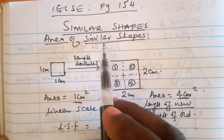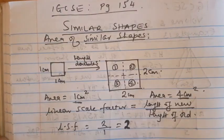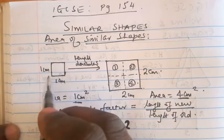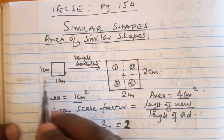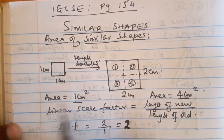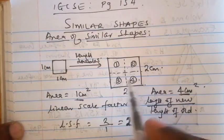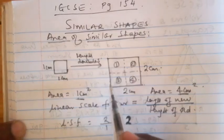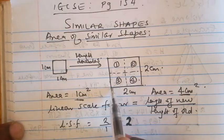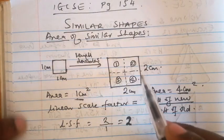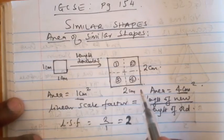Under similar shapes, I want us to talk specifically about the area of similar shapes. Allow me to have a square of one centimeter length and one centimeter width. If we happen to double the length of these dimensions, it will have a length of two centimeters because we are doubling from one to two, and a width of two centimeters as well.